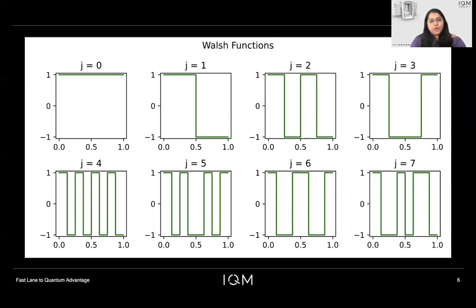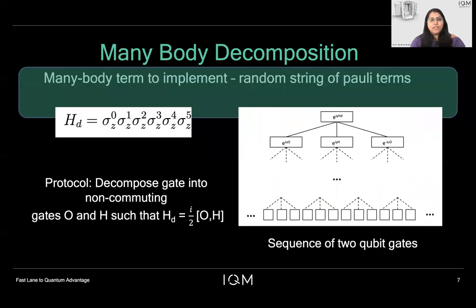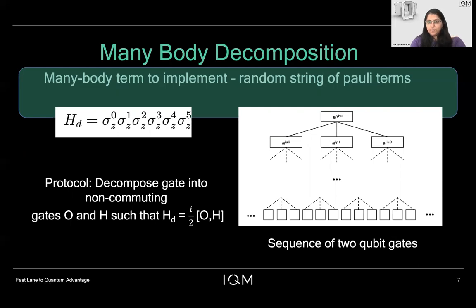With this, we now talk about how we could decompose many-body interactions into two-qubit gates. To do that, we would first decompose a gate into non-commuting operators O and H such that the commutation of O and H gives you the many-body interaction to be implemented. If O and H are subsequently multi-qubit interactions as well, we would decompose them further till we are left with a sequence of two-qubit gates. Once these two-qubit gates are native, they can be easily implemented on the chip. If they are not, we need to further perform single-qubit rotations such that we can convert these non-native gates to native gates.